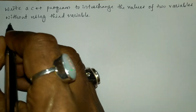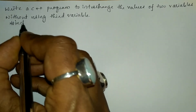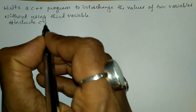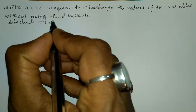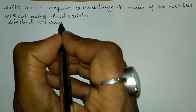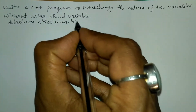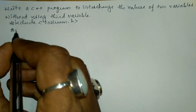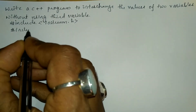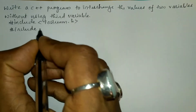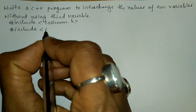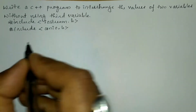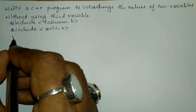Let us write the preprocessor directives. Hash include in angular brace we will write the input output stream dot h header file, and the next preprocessor directive is hash include in angular brace we will write console input output dot h header file.